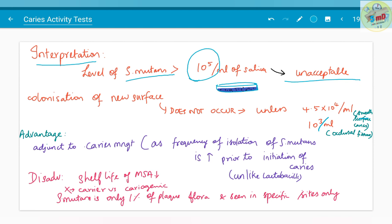Colonization of new surface happens only when the count is greater than 10 to the power of 4 per ml. Colonization of new surface does not occur when it is less than 4.5 into 10 to the power of 4 streptococcus mutans colony forming units per ml, or 10 to the power of 3 per ml for occlusal or fissure surfaces. The first one will go for smooth surface caries.